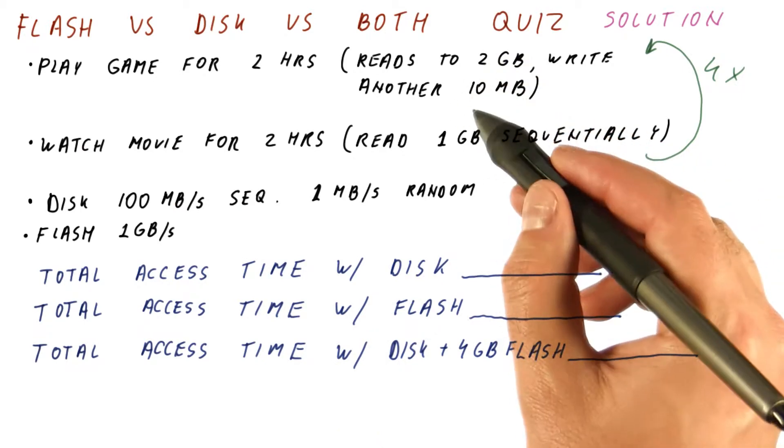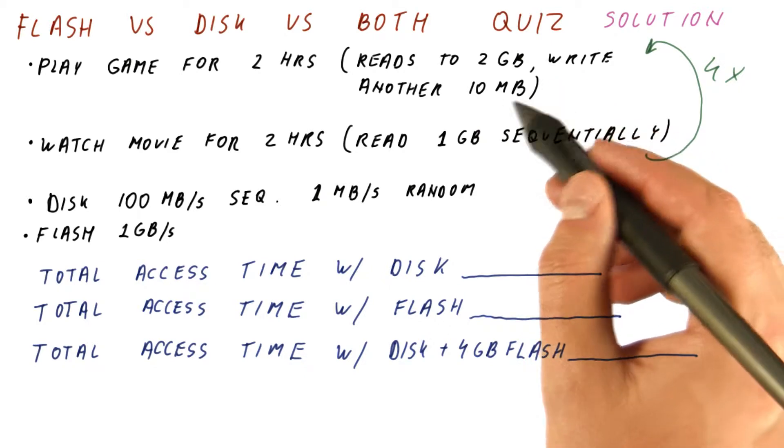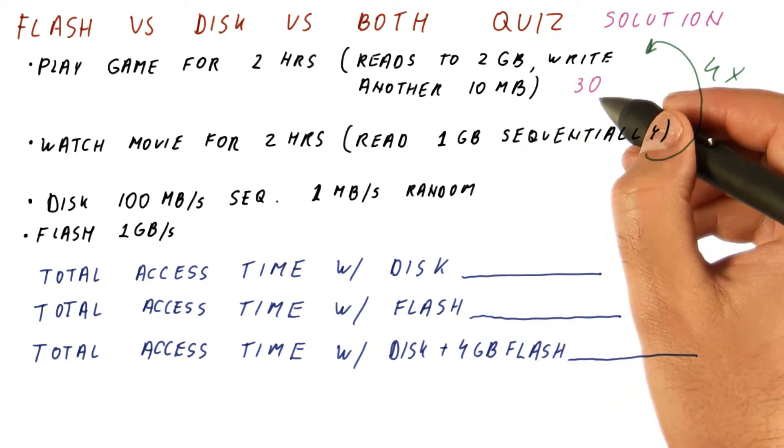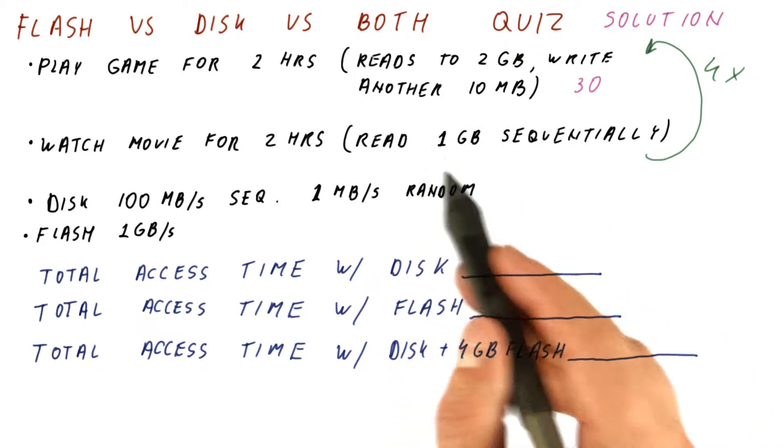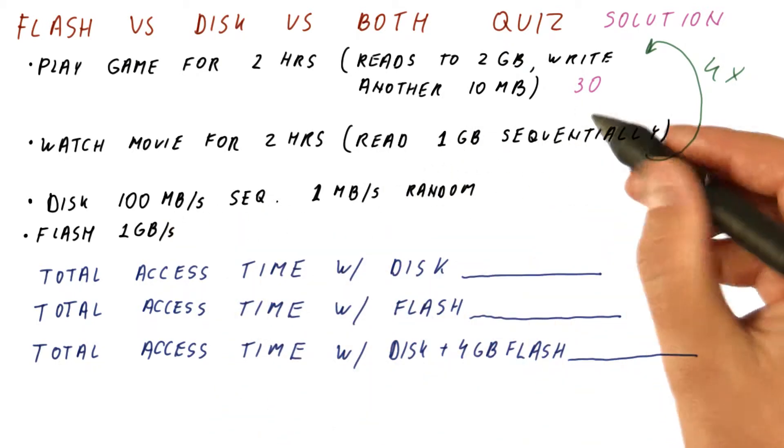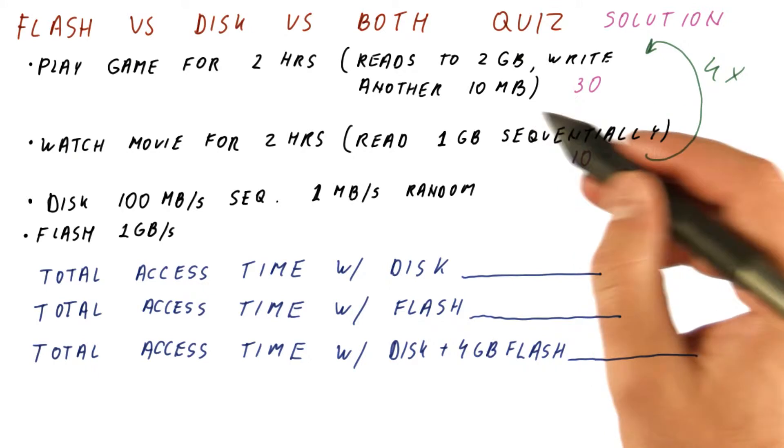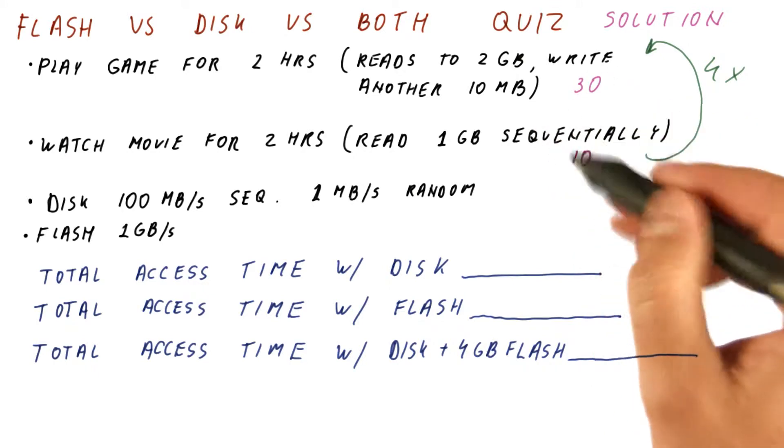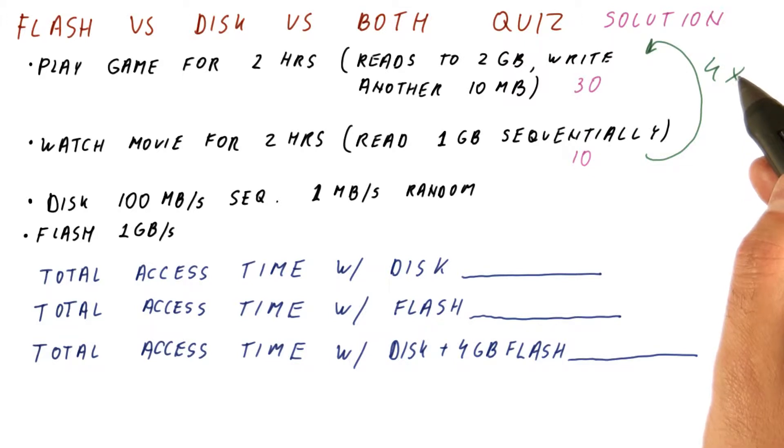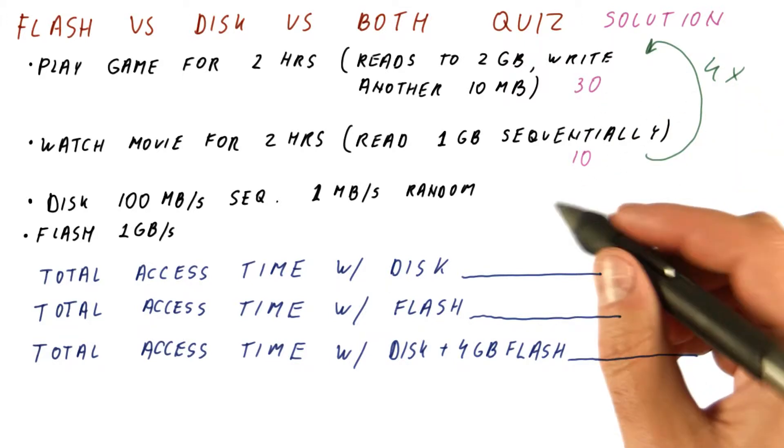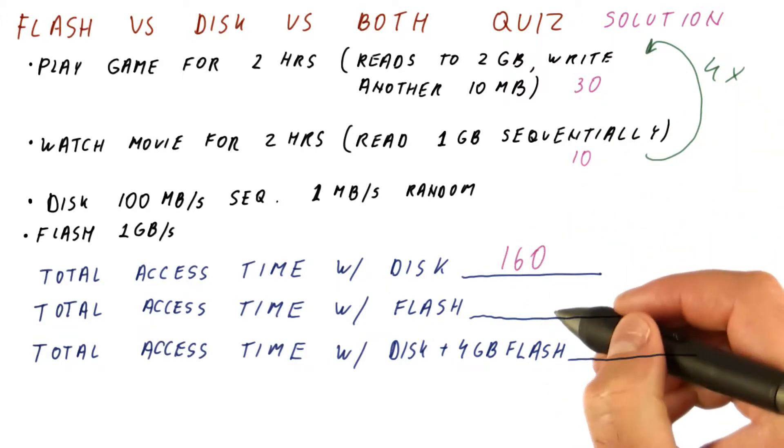And we will also spend 10 seconds writing to the 10 megabytes. So we will spend 30 seconds here. And then a sequential read of the 1 gigabyte here will be another 10 seconds. So over the 4 hours we spent 40 seconds reading and writing using the disk. We repeat that 4 times and we get 40 seconds times 4 equals 160 seconds.